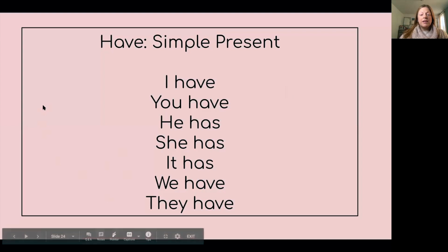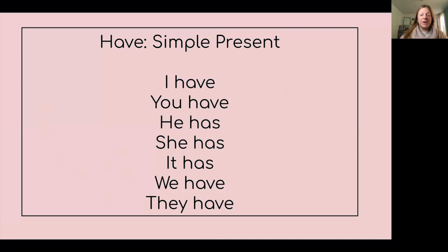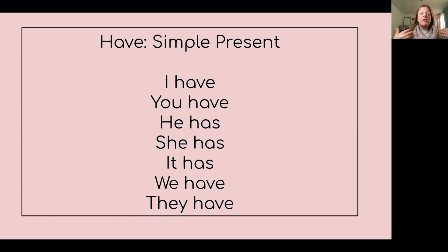To talk about the rooms in your house, we normally use the verb 'have.' For example: I live in a house. I have three bedrooms. I have one bathroom. I have a porch and a yard. Talking about the rooms or parts of your house, you use the verb 'have.'